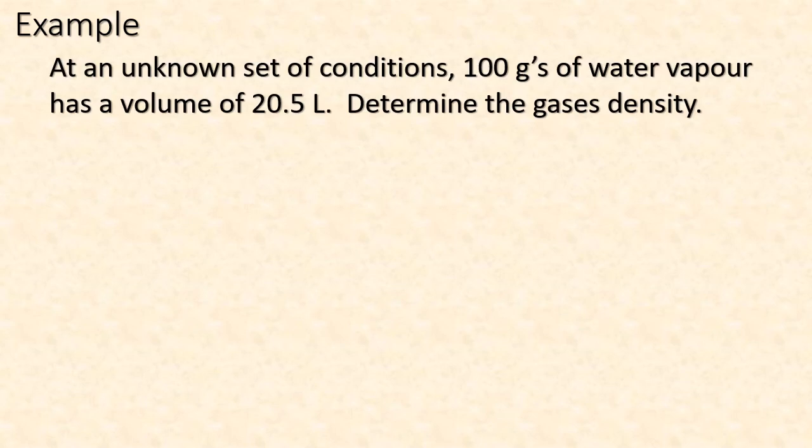So at an unknown set of conditions, we've got 100 grams of water vapor, and it's got a volume of 20.5 liters. That's how big it is. We're going to determine the density. Before we get to density, we've got to calculate the molar volume. If it were STP or SATP, we would know—22.4, 24.8—but we don't know it, so we're going to have to calculate it.